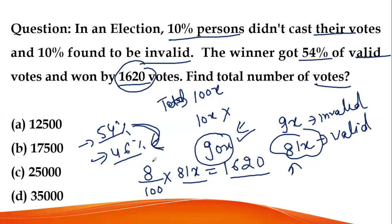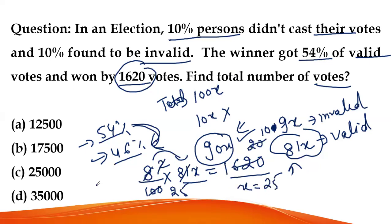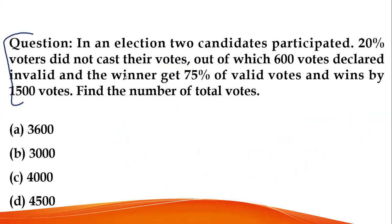You can cancel out: 81 and 20 cancel. After cancellation, the value comes to 10, so x = 250. The total number of votes is 100x = 100 × 250 = 25,000. If valid votes are asked, that would be 81x. The total number of votes is 25,000.